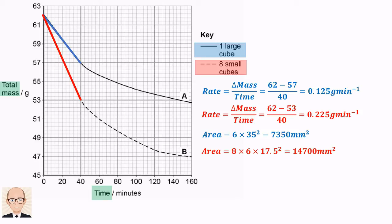Now we can finally calculate what we've been asked to do. The rate of osmosis per square millimetre for the large cube is the rate divided by the area, which is 1.7 x 10 to the minus 5 grams per minute per square millimetre.